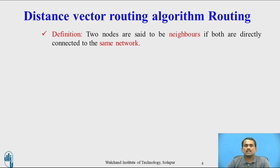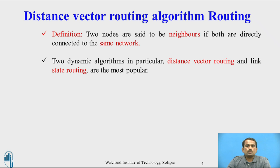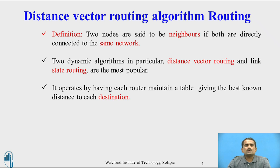What is a routing algorithm? Two nodes are said to be neighbors if both are directly connected to the same network. This concept is called the distance vector routing algorithm. Two dynamic algorithms — the distance vector routing algorithm and the link state routing algorithm — are the most familiar routing algorithms. We will discuss only the first one: the distance vector routing algorithm. This algorithm operates by having each router maintain a table giving the best known distance to each other.